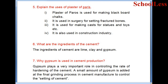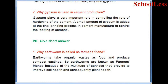Question 6: What are the ingredients of cement? The ingredients of cement are lime, clay, and gypsum. Question 7: Why is gypsum used in cement production? Gypsum plays a very important role in controlling the rate of hardening of cement. A small amount of gypsum is added at the final grinding process to control the setting of cement.